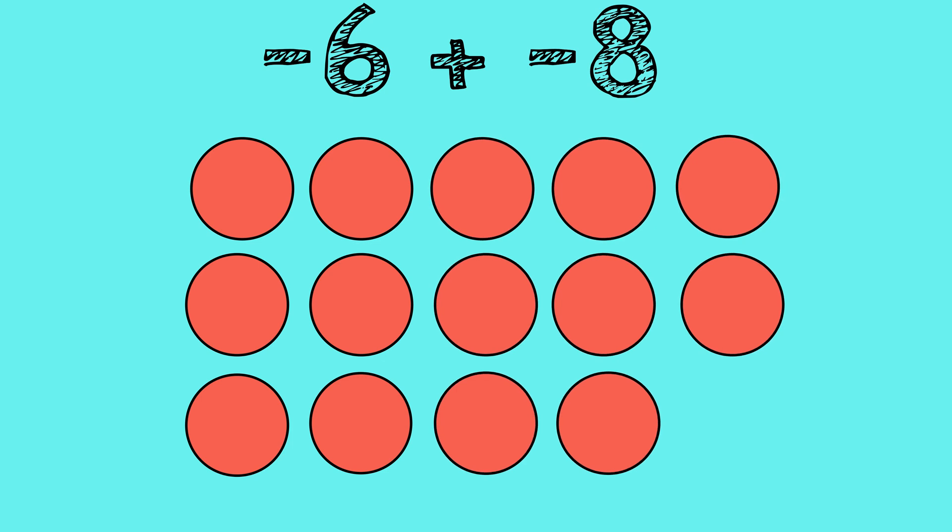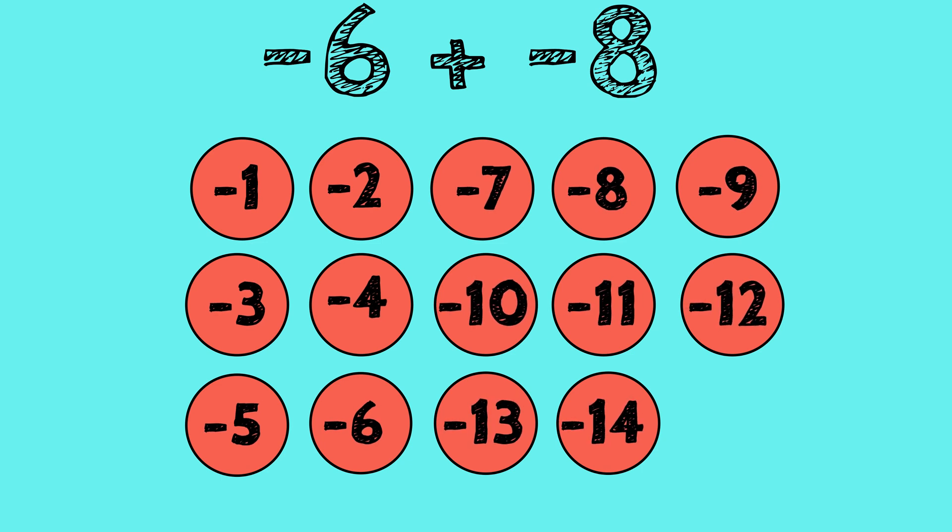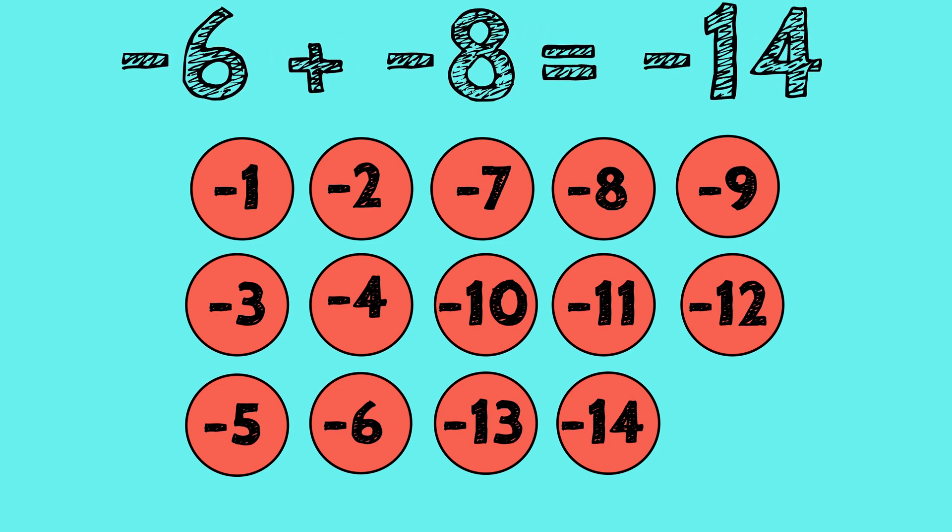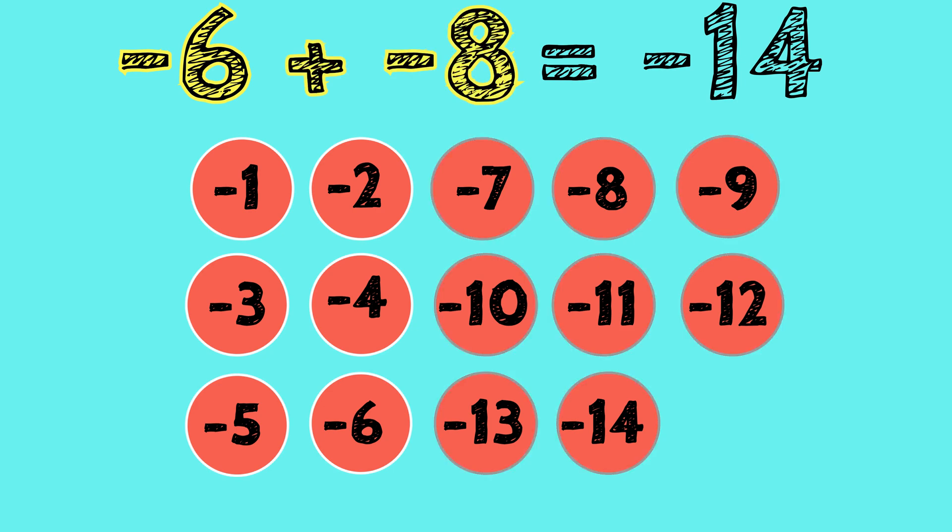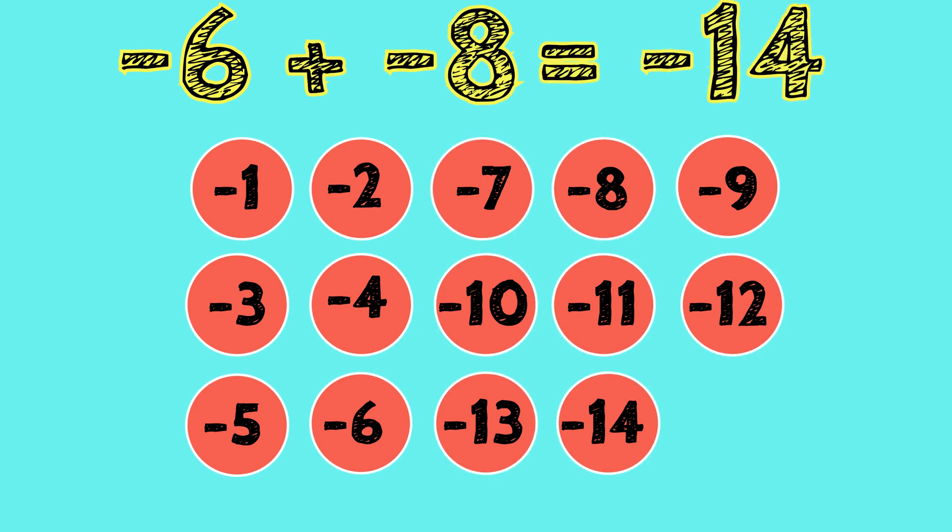We have a total of 14 red counters, so our answer is negative 14. Negative 6 plus negative 8 is equal to negative 14.